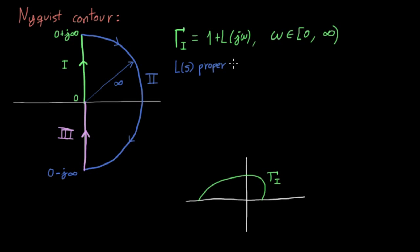Now, if L is a proper function, meaning that the degree of its numerator doesn't exceed the degree of its denominator, then 1 plus L of j infinity is a real number. In fact, if it is a strictly proper transfer function, that is, if it has more poles than zeros, that real number is 1, because L of j infinity goes to 0. In either case, you can easily check that that point is also the image of all the other points along the semicircle. In other words, the whole image of the second path is just one point in the real axis, and in most cases that point is 1.